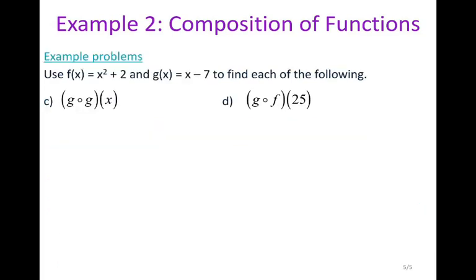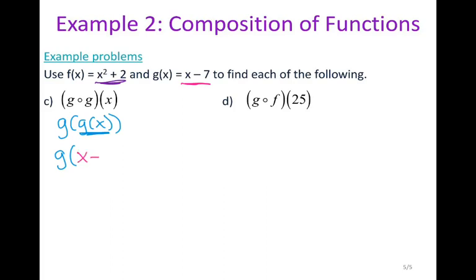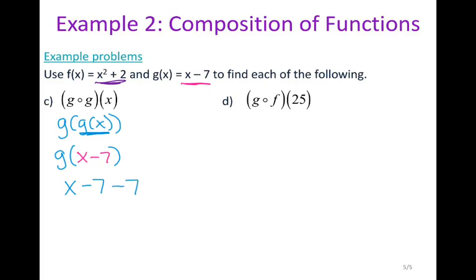Using the same functions, for g of g of x we take a composition of g with itself. I rewrite the inner g of x as x minus 7, then plug that into g: x minus 7 minus 7. Combining like terms gives x minus 14.